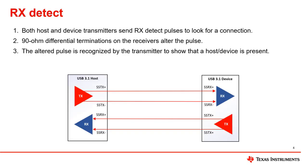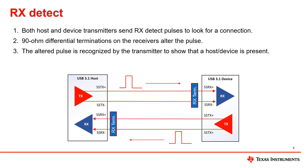The first stage in USB 3.1 enumeration is RxDetect. This state begins when you power on the USB host and device, but a connection has not yet been established. The USB host will periodically send a pulse-like signal on its transmitter to detect terminations from a connected device. These terminations are located on the device's receiver and will alter the RxDetect pulse so the host knows that a device is present. The device will similarly send RxDetect pulses on its transmitter to the host receiver. When both terminations are successfully detected, both the host and device transition to the polling state.